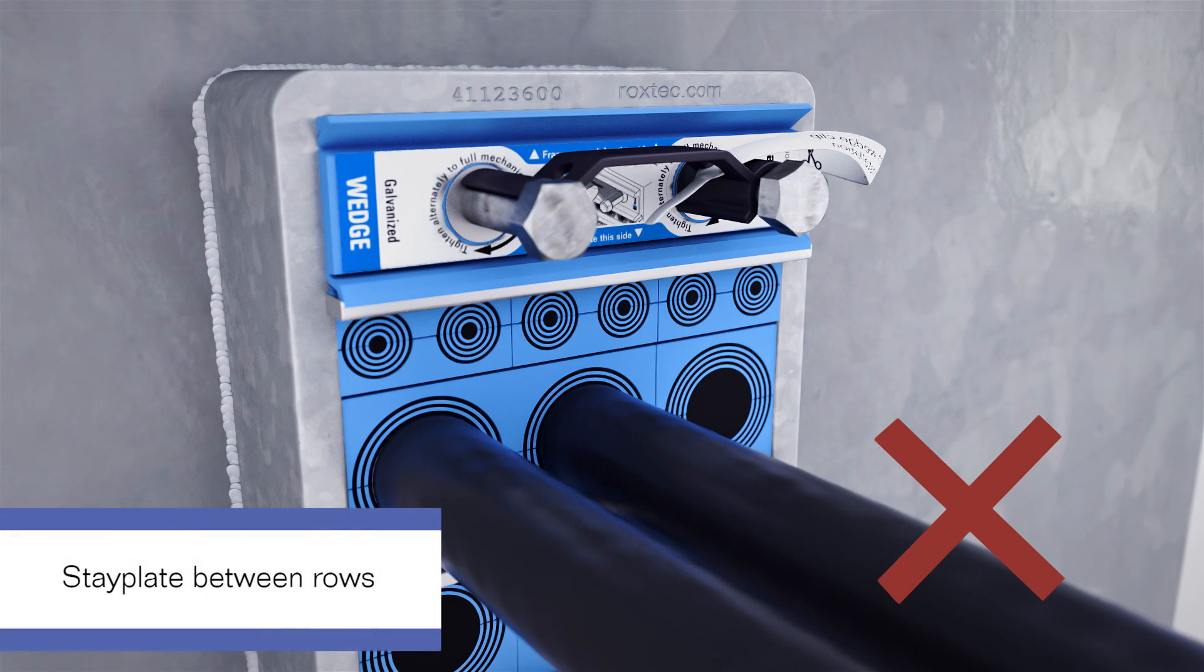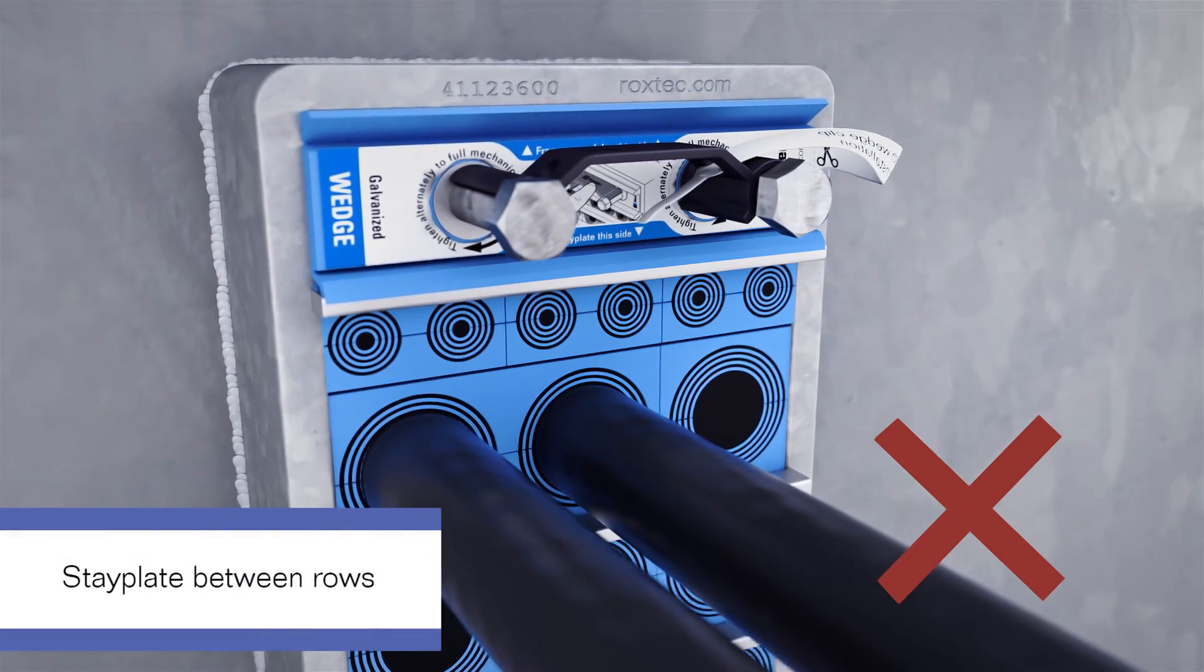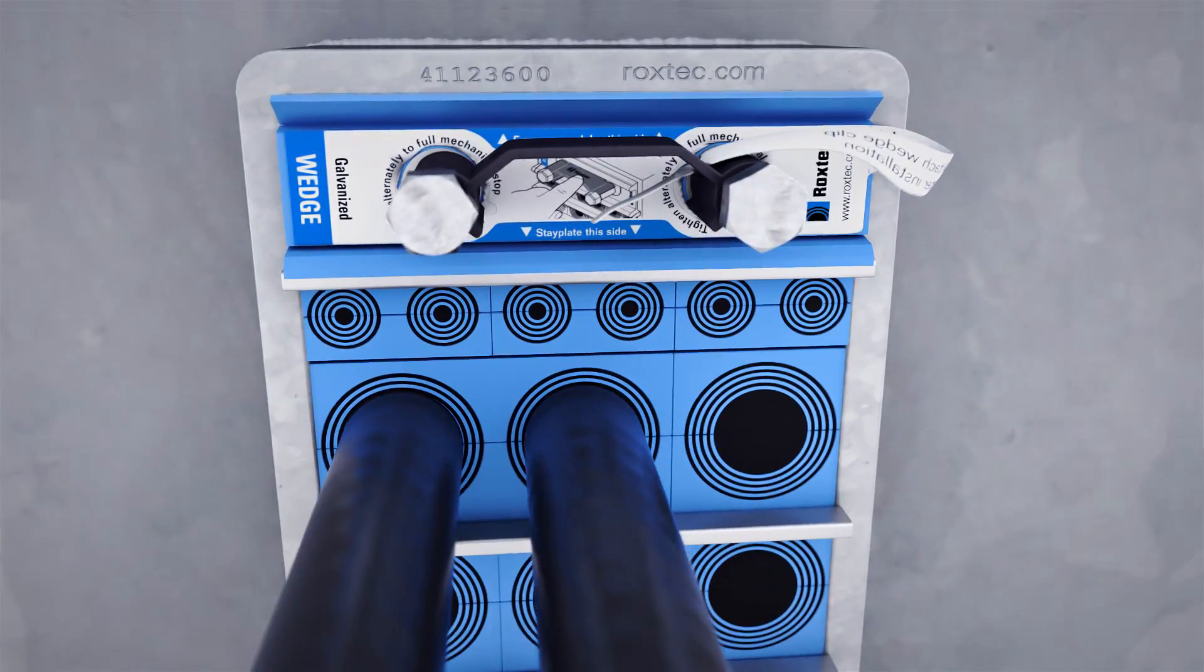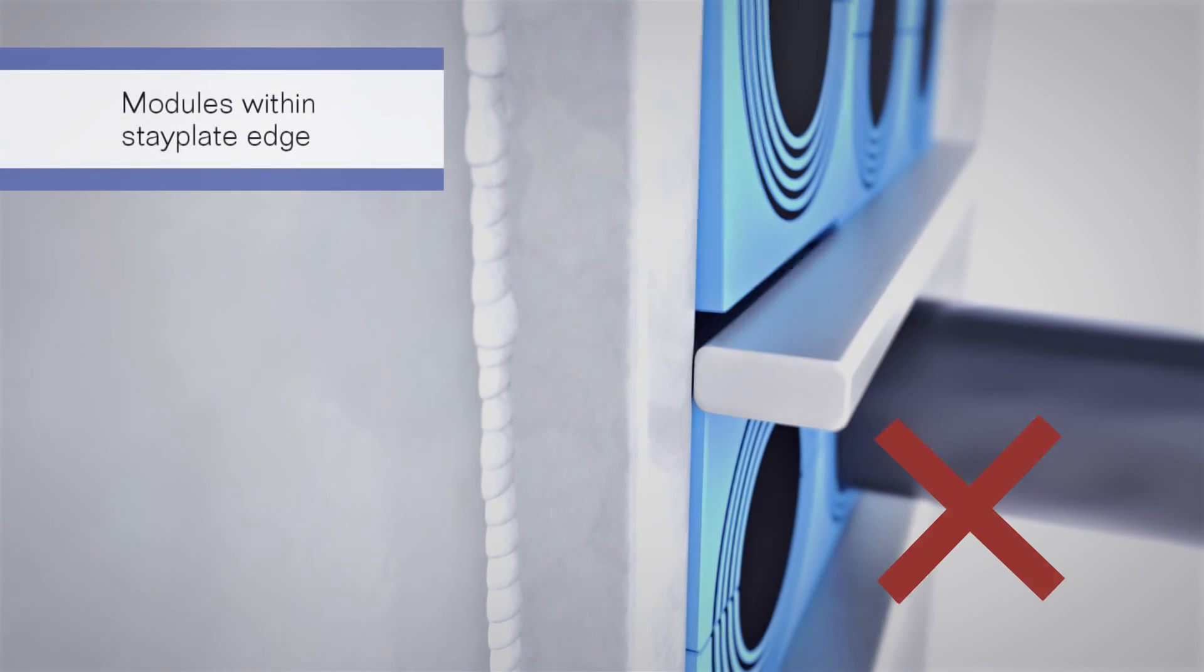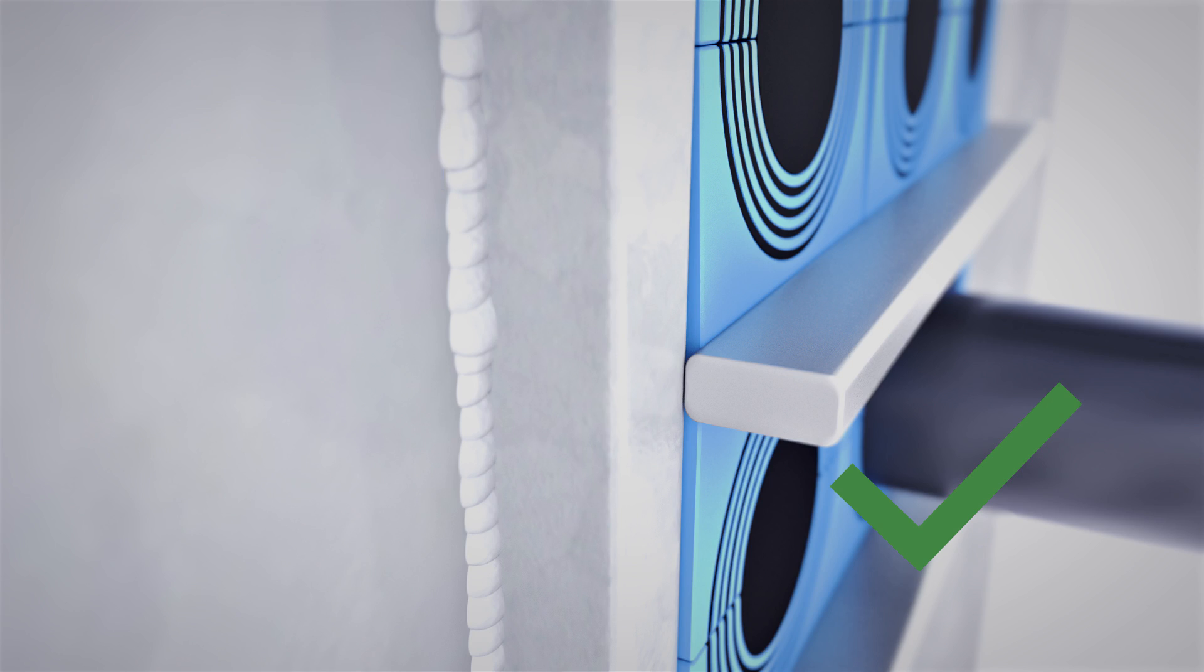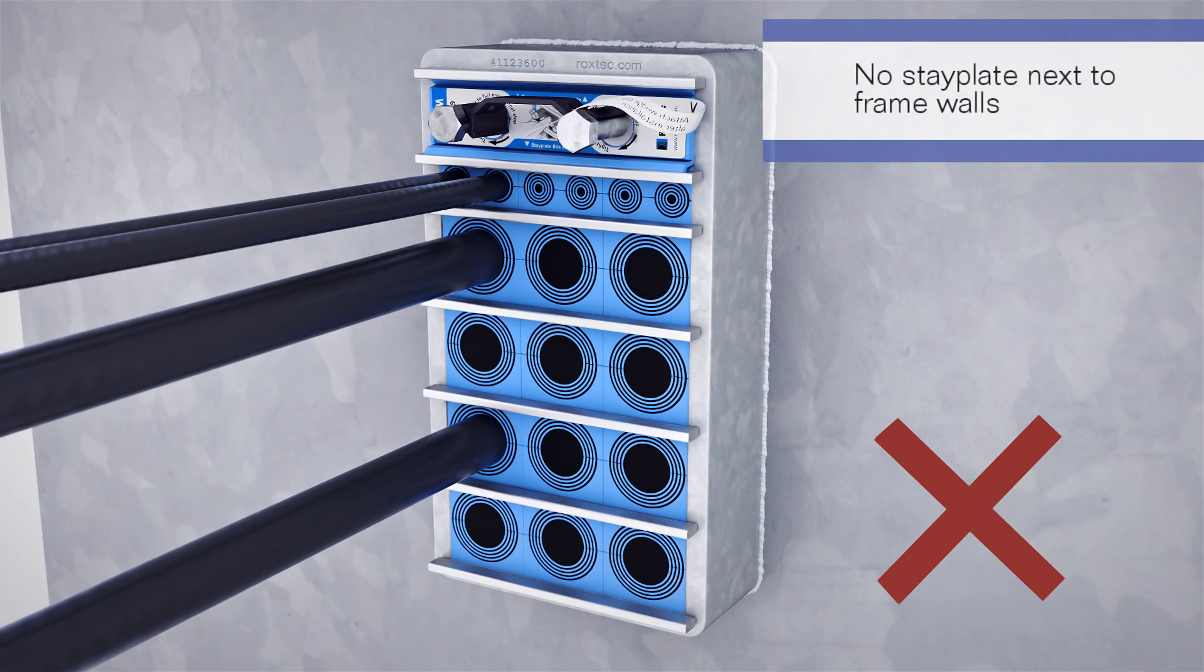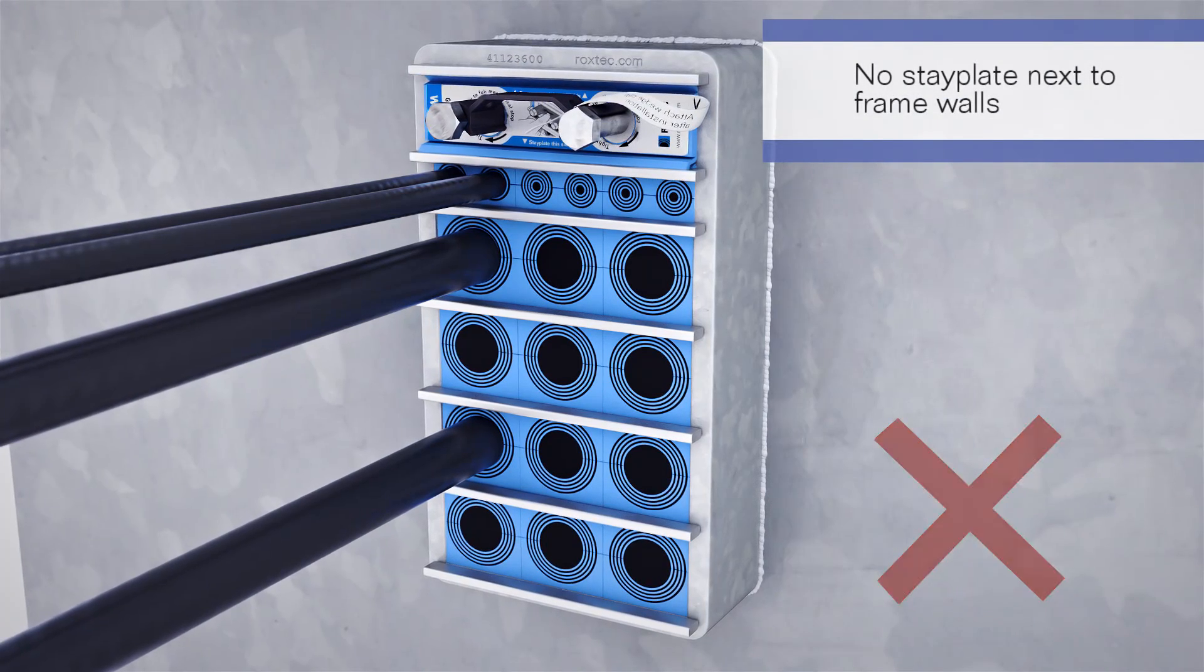Check that each consecutive row of modules is divided by a stay plate. Check that all modules are secured within the stop flanges of the stay plate. Verify that there is no stay plate installed next to the frame walls.